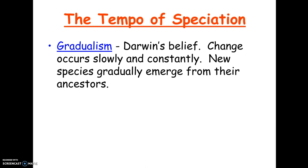The tempo of speciation has to do with the rate at which it happens. There are two different tempos, and both happen — it's not that one is right and one is wrong. Gradualism is what Darwin came up with. He was in the Galapagos Islands, saw the tortoises, and when he looked into cliff sides he saw ancient tortoises with little changes over time. He would have said evolution happens at a slow and steady rate — little changes leading up to the tortoise of today.